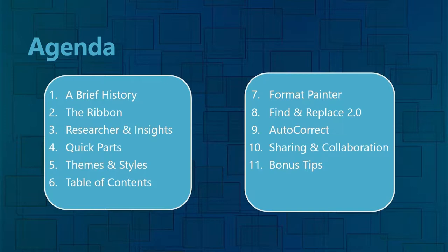We'll do a quick history on the product itself and then go into these topics: customizing the ribbon, researcher and insights, quick parts, themes and styles, how to create a table of contents automatically, format painter, the updated version of find and replace, customizing autocorrect, sharing and collaboration, and I've got a few bonus tips as well.